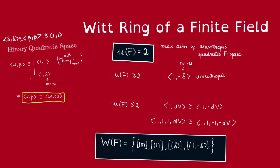Clearly because we can point out an anisotropic space of dimension 2. Right, if we take this to be a non-square, we claim that this must be an anisotropic space. Why is that? So what this means is this does not have any non-trivial representation of 0. So let's see why. So let's say we have a representation of 0. That means that we have x and y, such that x minus delta y squared is 0.